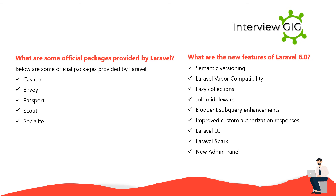What are some official packages provided by Laravel? Some official packages include: Cashier, Envoy, Passport, Scout, and Socialite. What are the new features of Laravel 6.0? New features include: semantic versioning, Laravel Vapor compatibility, lazy collections, job middleware, Eloquent sub-query enhancements, improved custom authorization responses, Laravel UI, Laravel Spark, and a new admin panel.